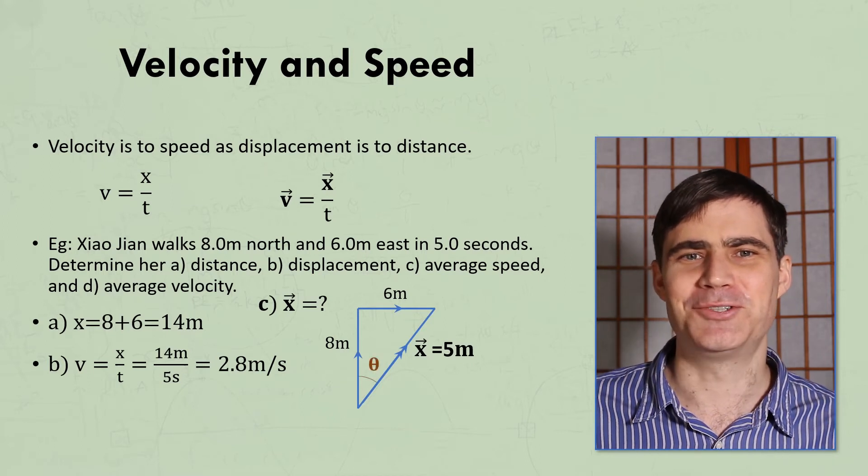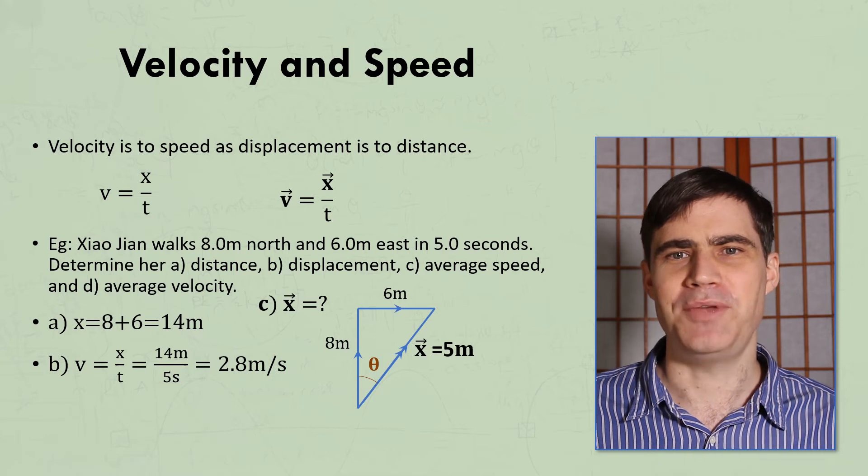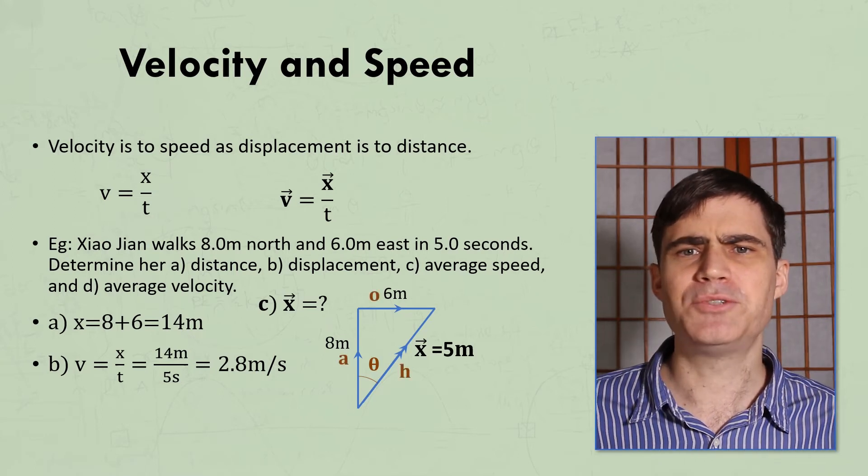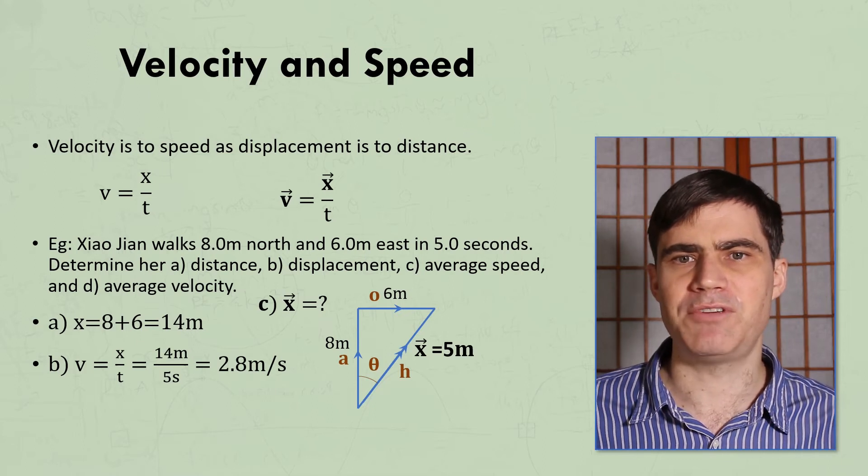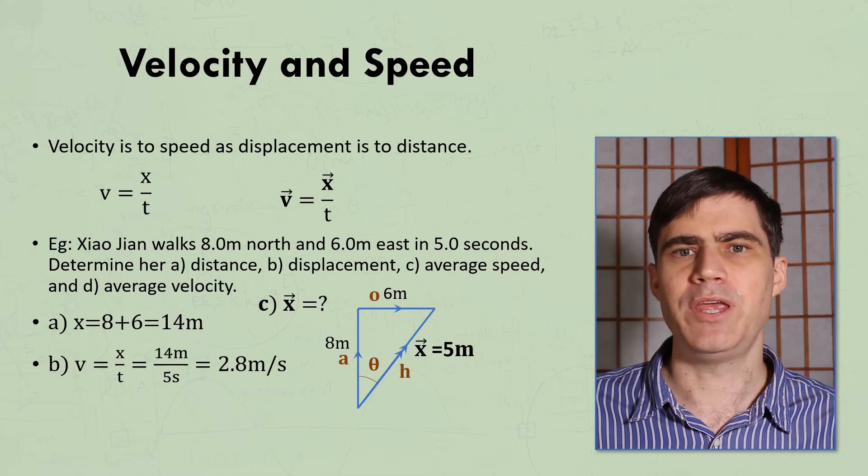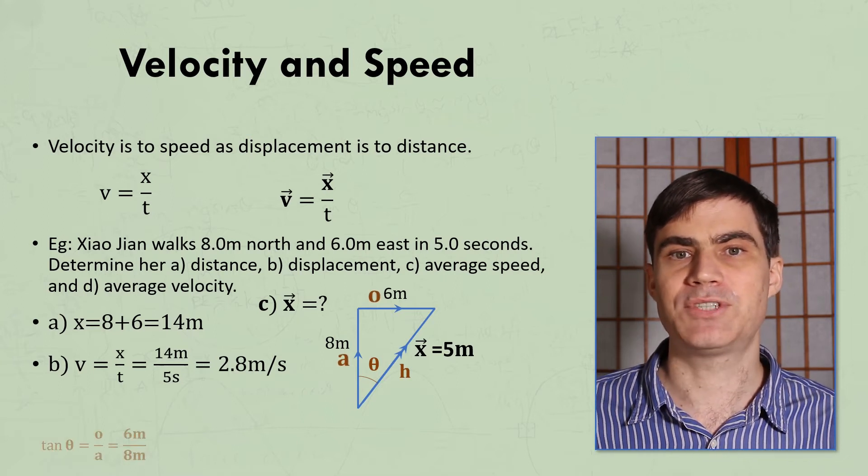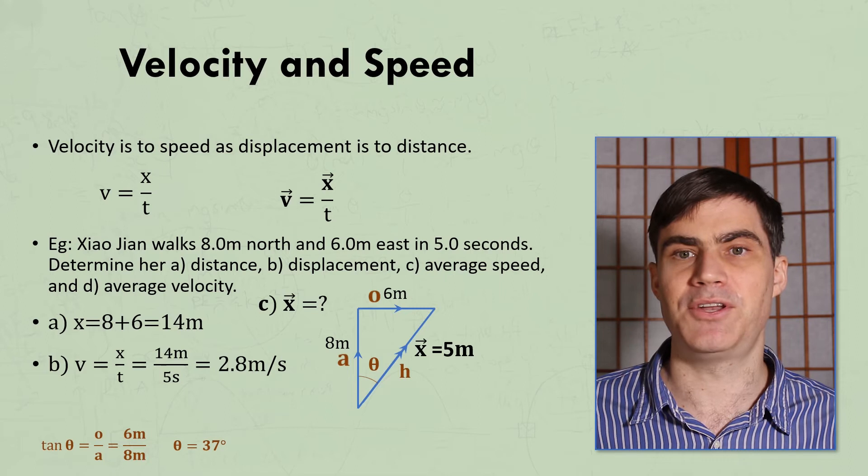Any good physics student should also know SOHCAHTOA. So here we have the adjacent, opposite, and hypotenuse. Now, we could really use any of these. But since the opposite and the adjacent were given to us in the original problem, and we used them to calculate the hypotenuse, let's use O and A. So we use tan theta and get an angle of 37 degrees.